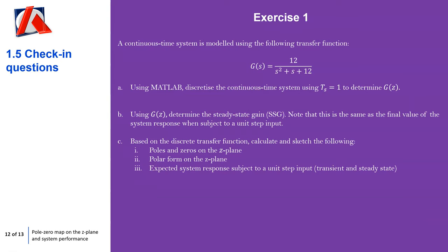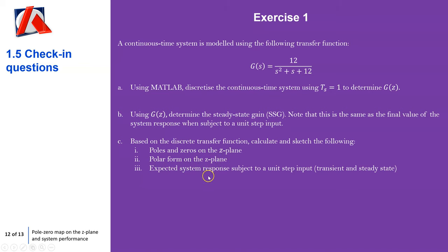Exercise 1 is very similar to the worked example. The only difference is a changed transfer function, plus an additional part: using MATLAB, discretize the continuous-time system with Ts = 1 to determine G(z), giving you practice at continuous-to-discrete conversion. The remaining parts are similar to before: determine the final value and steady-state gain, note that they are equal, determine poles and zeros and polar form, plot them on the z-plane, and sketch the expected system response subject to a unit step input.